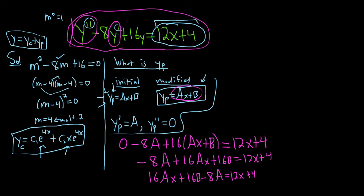Now we can use matching to figure out what the coefficients are. We have 16a in front of the x. Here we have 12 in front of the x. That means 16a must be equal to 12.